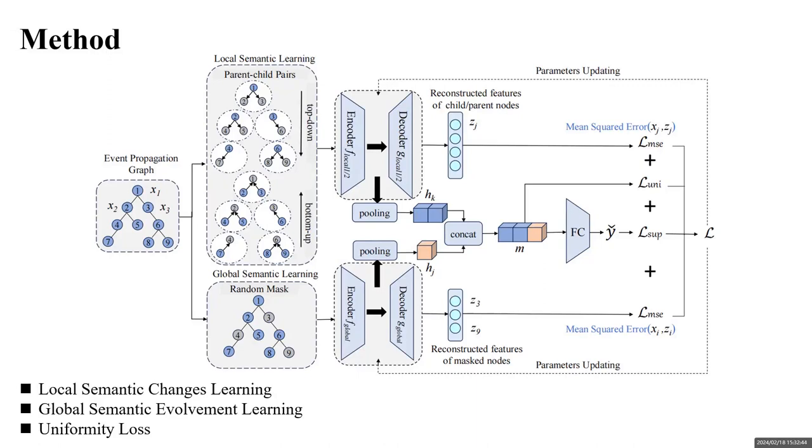In order to capture the global semantic evolvement information, we introduce a global semantic learning module by conducting features random mask reconstruction on undirected propagation graph.